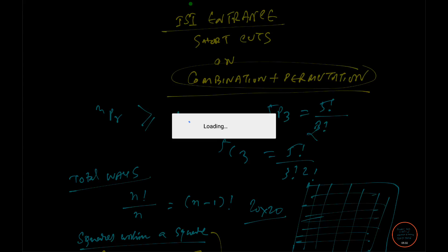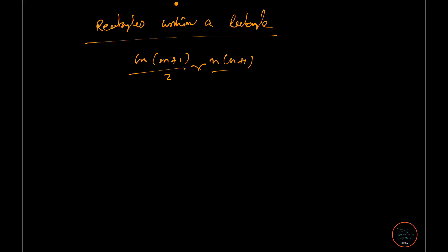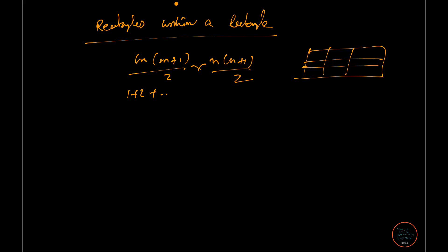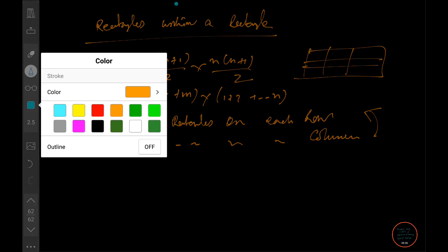Now if we have a general rectangle instead of a square: the total number of rectangles within an M×N rectangle has the formula [M(M+1)/2] × [N(N+1)/2]. This comes from (1+2+...+M) × (1+2+...+N), where M equals the number of divisions on each row and N equals the number of divisions on each column.